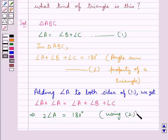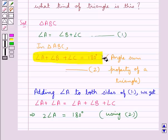Using equation 2, in which we have angle A plus angle B plus angle C is equal to 180 degrees.